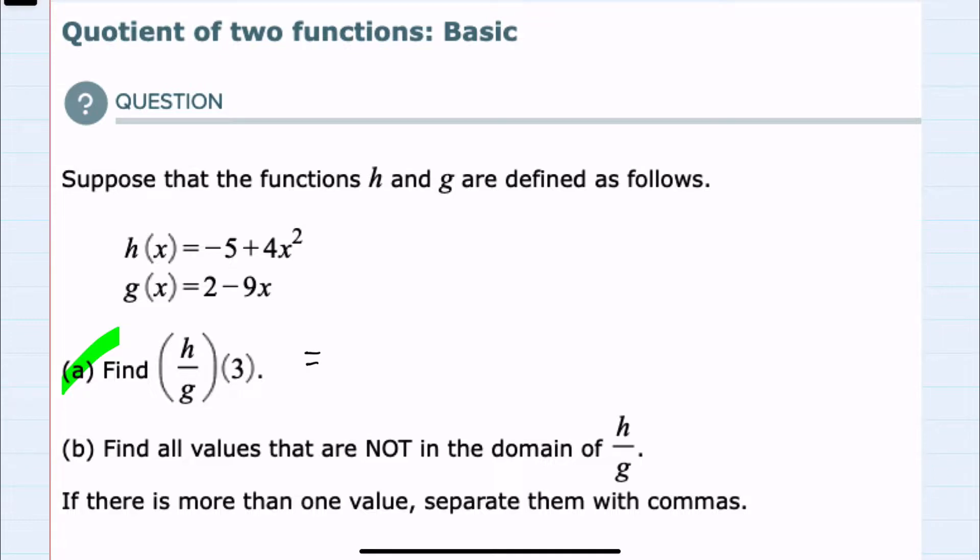I'll start by simplifying that to be h(3) divided by g(3). From here, I can make the substitution of 3 in the numerator, which is the h function, replacing x with 3.